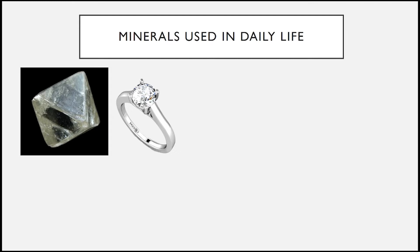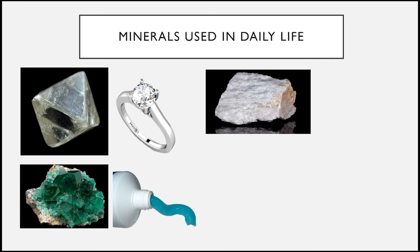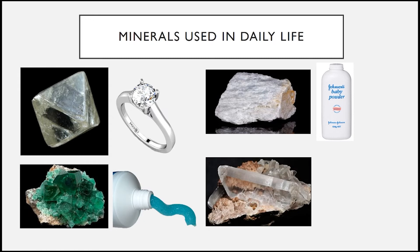Other uses of diamond include saw blades or glass cutters, which have a component made up of diamond. Another example of a mineral we use every day is fluoride, which is present in our toothpaste. Another mineral we use every day is talc — when talc is pulverized it produces a soft powder that we use in face powder, which is why face powder is sometimes called talcum powder.